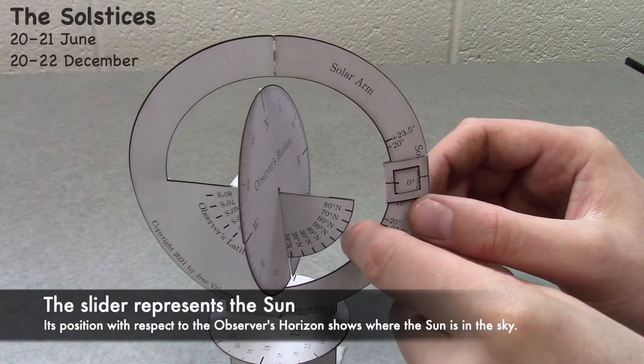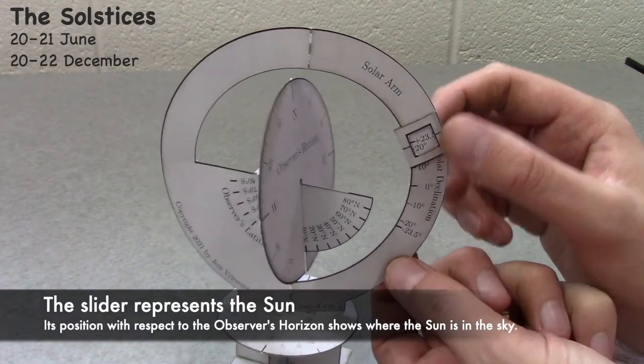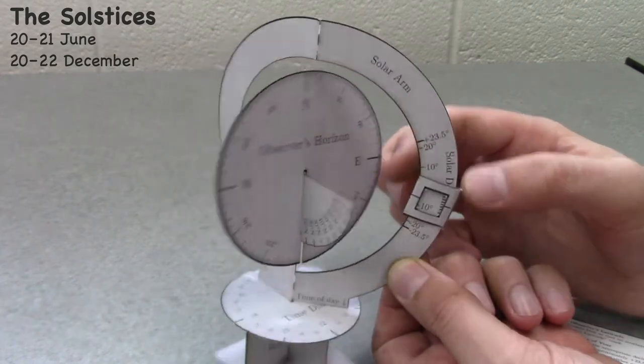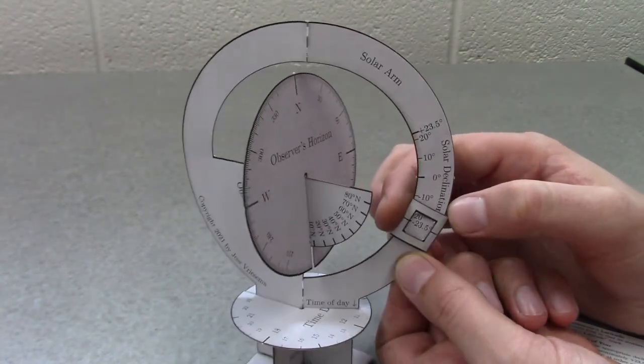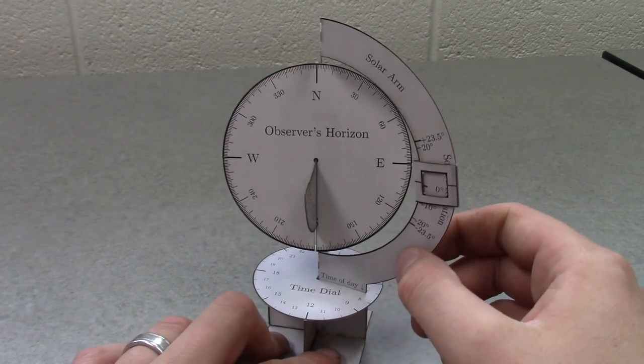On approximately June 21, it has a solar declination of 23.5 degrees. And in roughly December 21, the sun's declination is negative 23.5 degrees.